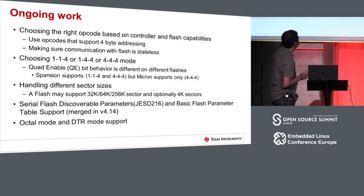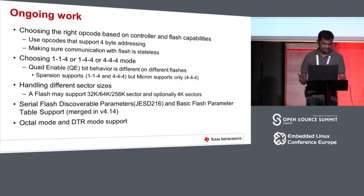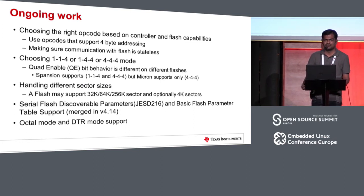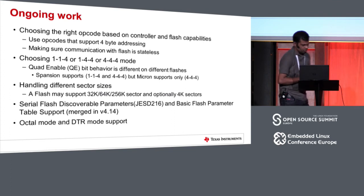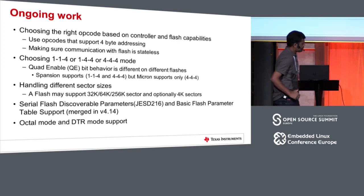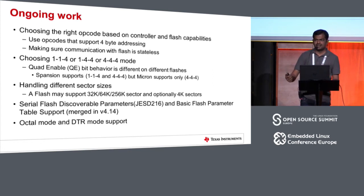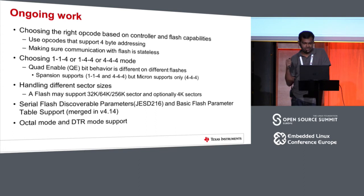Ongoing developmental work in the SPI NOR framework includes use of 4-byte addressing mode for opcodes. Older flashes had sizes less than 16 megabytes and required 3-byte addressing, but newer flashes have higher density and require 4-byte addressing. There are special opcodes which expect 4-byte addressing, and flashes provide many ways to access memory regions above 16 megabytes. You can enter 4-byte addressing mode by setting a bit within the flash, after which all 3-byte addressing opcodes also expect 4-byte addresses. Or you could use dedicated opcodes which always expect 4 bytes regardless of flash state. We should ensure communication with the flash is stateless and no bit is set within the flash to enter or exit 4-byte addressing mode, to avoid incompatibilities with boot loaders which expect 3-byte addressing mode.